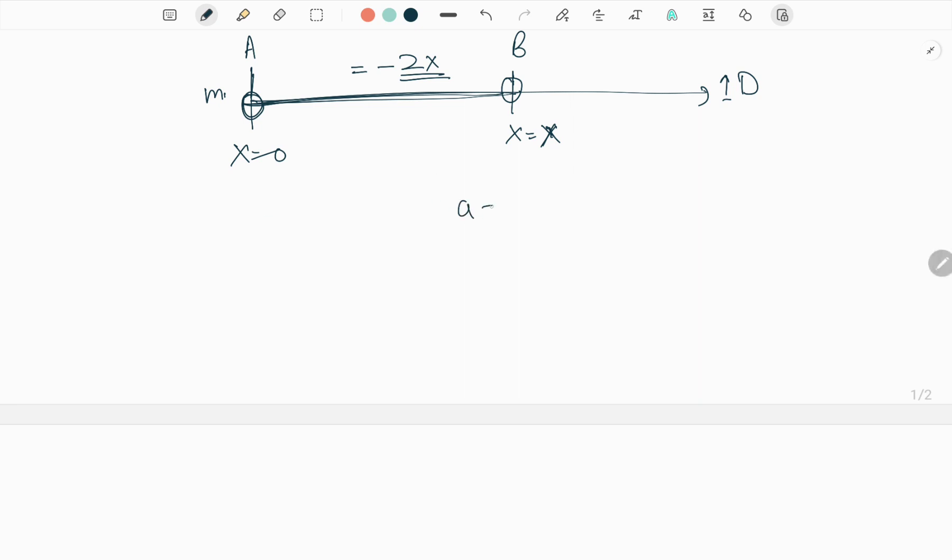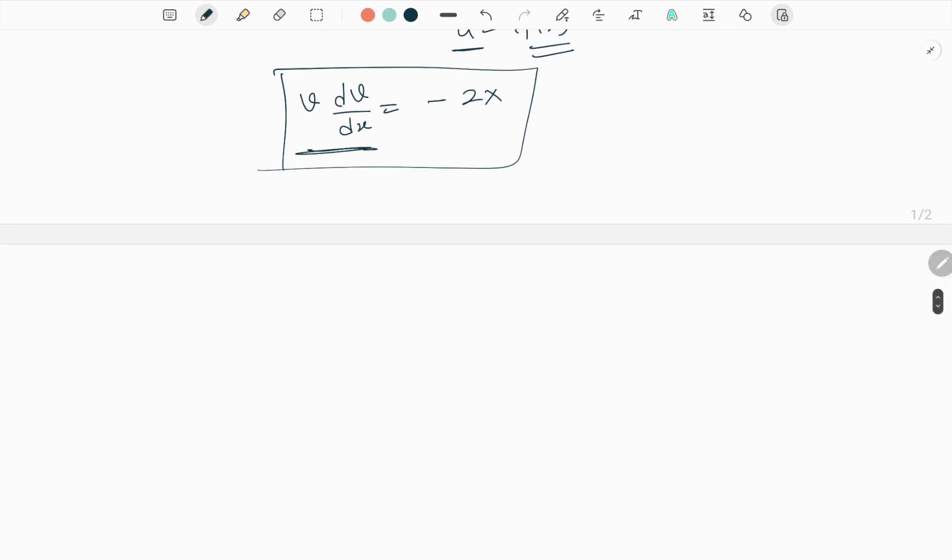And here the acceleration is a function of x. The acceleration is function of x, so we can write this: v dv/dx equals minus 2x. This is very important because acceleration is a function of x.